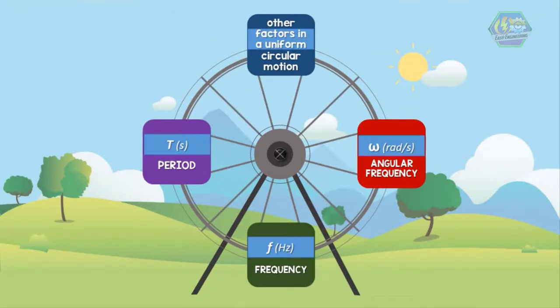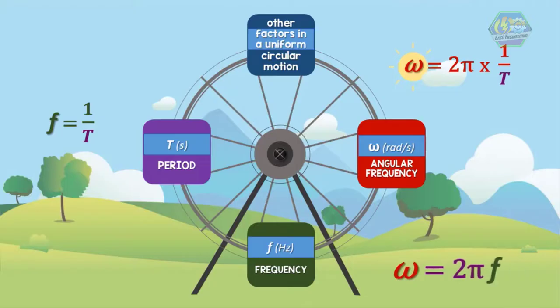These three quantities are related. You see, angular frequency is equal to 2π times 1 over the period. But since frequency is equal to 1 over the period, then we can say that the angular frequency is equal to 2π times the frequency. ω = 2π × 1/T = 2πf.